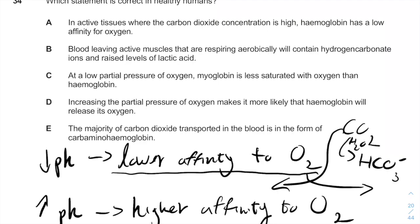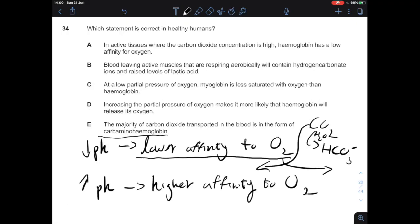Dissolved carbon dioxide in the plasma accounts for only about 10%. Protein-bound CO₂ — called carbaminohemoglobin — accounts for about 30% of carbon dioxide transport back to the alveoli. Chemically modified carbon dioxide, meaning CO₂ converted into bicarbonate, accounts for 60% of transport to the alveoli. So in summary: free dissolved CO₂ is 10%, carbaminohemoglobin is 30%, and bicarbonate is 60%.